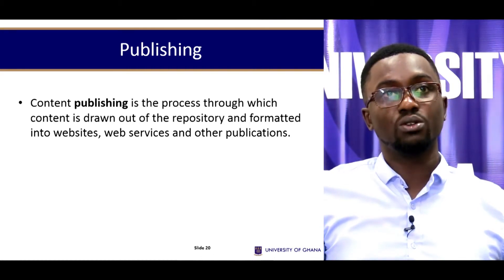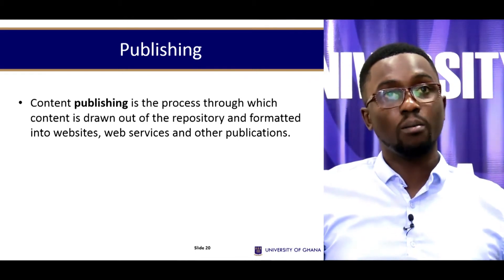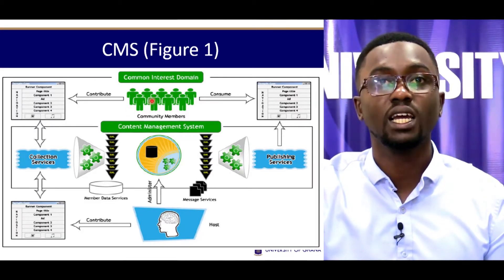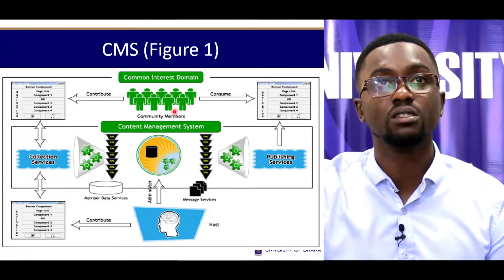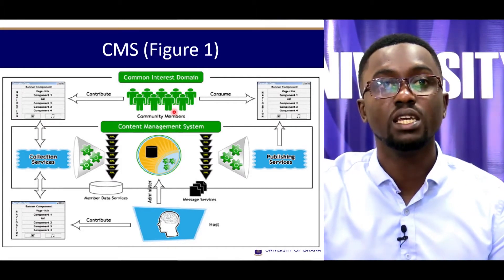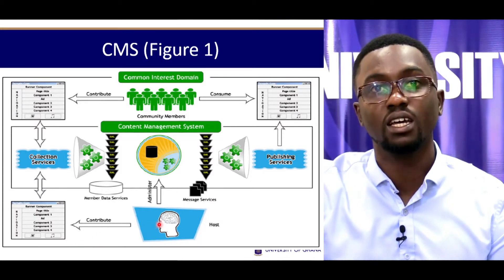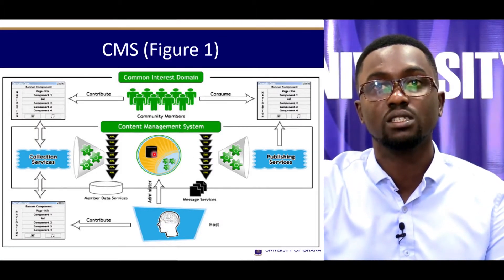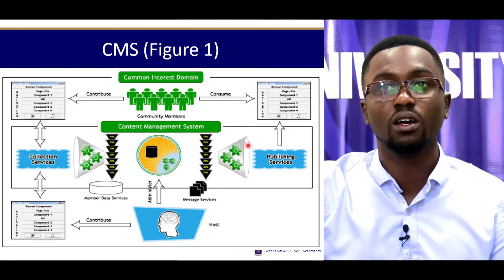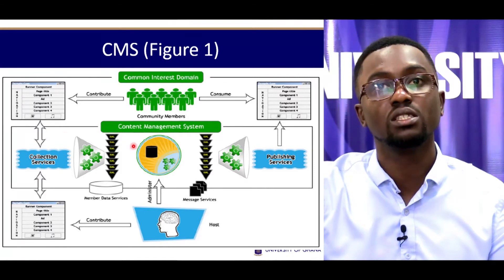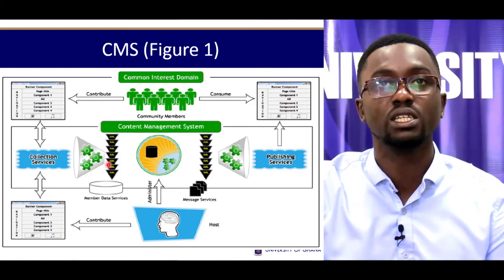Content publishing is the process through which content is drawn out of a repository and formatted into websites, web services, and other publications. This figure describes a content management system and shows how it works — the hosts administer the content in the CMS, along with publishing services and collection services.